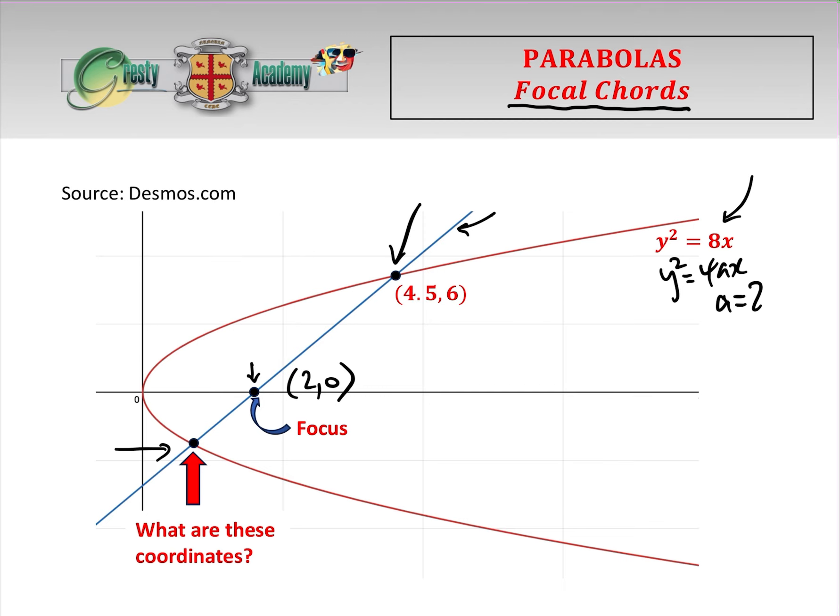Now we know that's 4.5, 6, and we know that is at squared, 2at. So using either of these two, we can work out from either of those, we know a is 2, so this is probably easier using 6, so 6 equals 2 times a, which is 2 times t, i.e. t equals 3 over 2.